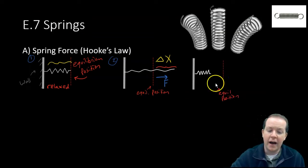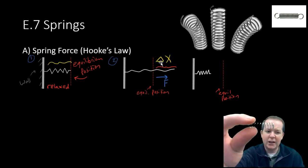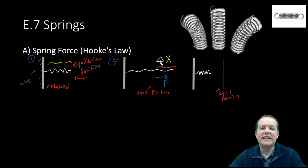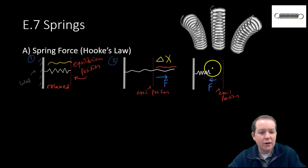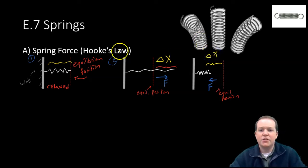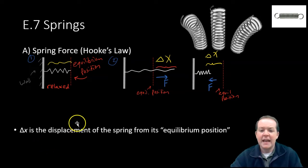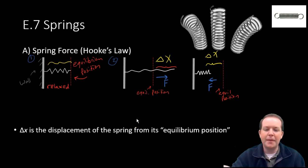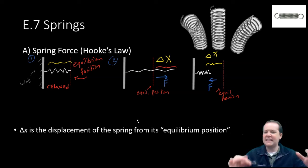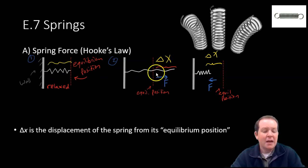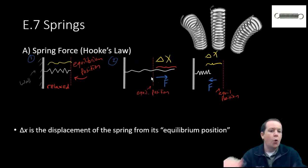Now I stop pulling and let it go back to its relaxed state. Then I apply a force in the opposite direction, compressing it inward. Now that spring is being compressed, and there is some distance it is away from its original equilibrium position — this is also called delta x. Simply put, delta x is the displacement of the spring from its natural rest or equilibrium position. If a problem says a spring is stretched 1 centimeter or compressed 7 centimeters, that's just how much the spring is changed from its original spot.